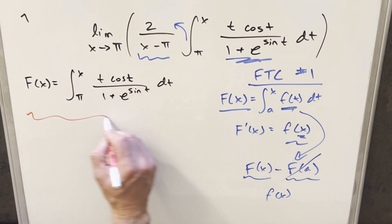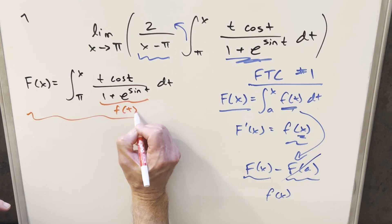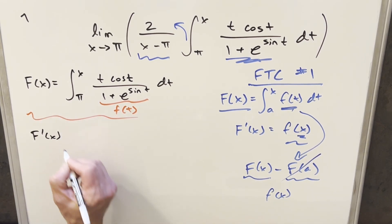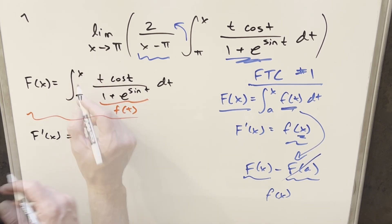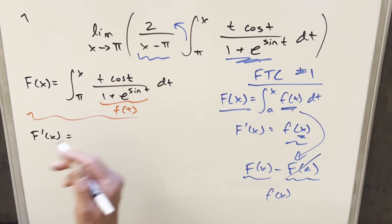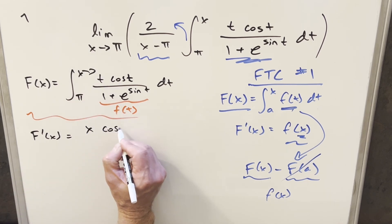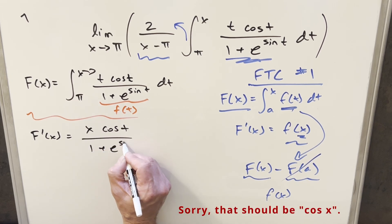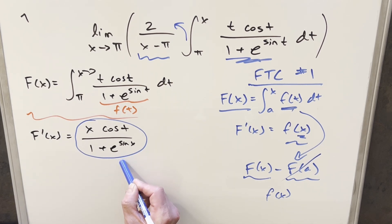Getting back to our problem, we want the derivative of the integral. The piece inside — t cosine t over 1 plus e to the sine t — is our f of t. So taking the derivative of the integral just means evaluating f of t at x, i.e., plugging x in everywhere we see a t. This gives us x cosine x over 1 plus e to the sine x. This is the derivative we need for L'Hôpital's rule.